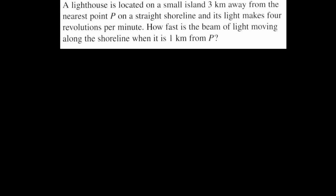In this video we're going to look at a related rate problem involving rotational motion. This is out of the James Stewart calculus book, sixth edition. It says: A lighthouse is located on a small island three kilometers away from the nearest point P on a straight shoreline, and its light makes four revolutions per minute. How fast is the beam of light moving along the shoreline when it is one kilometer from P?